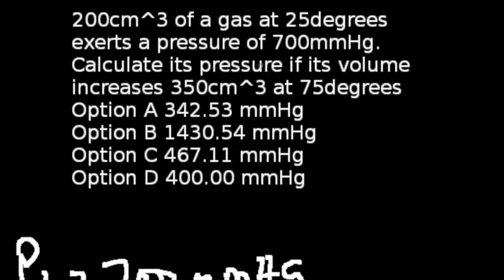So, question 5 of the Jan 2014 chemistry exams is what we are looking at. 200 cm³ of a gas at 25 degrees exerts a pressure of 700 mmHg. Calculate its pressure if its volume increases to 350 cm³ at 75 degrees.